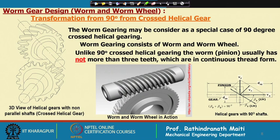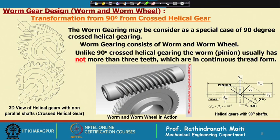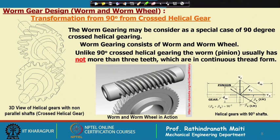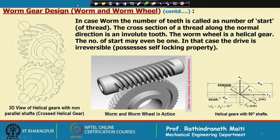Unlike a 90-degree crossed helical gear, the worm pinion usually has no more than 3–4 teeth, which are in continuous thread form. The worm wheel is a helical gear. The number of starts may even be 1; in that case the drive is irreversible and possesses self-blocking (self-locking) property — rotating the worm drives the wheel, but rotating the wheel cannot turn the worm. This is useful, for example, in inclined conveyor drives where the load must not back-drive.